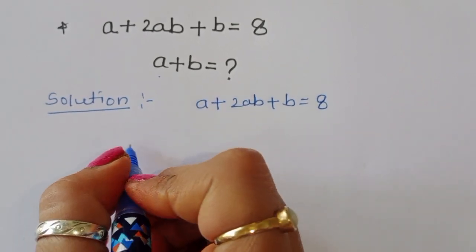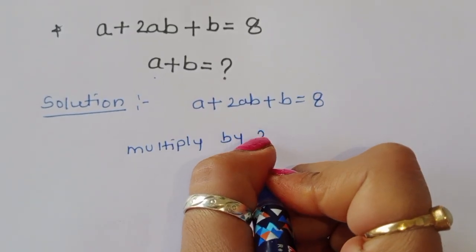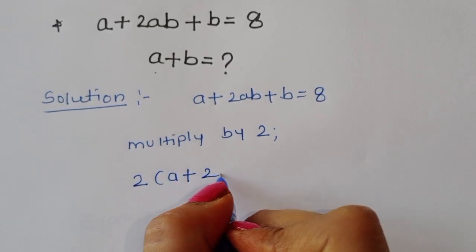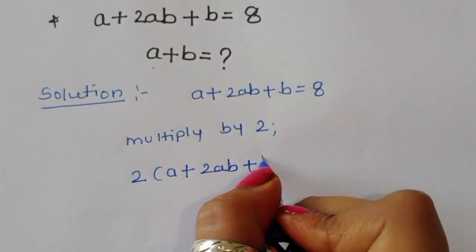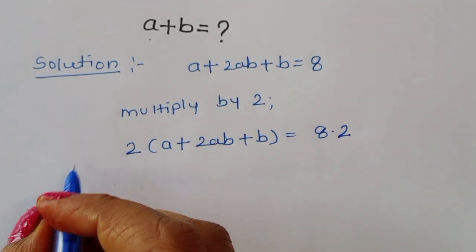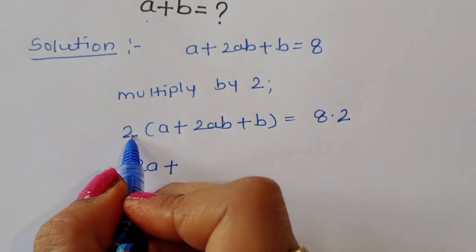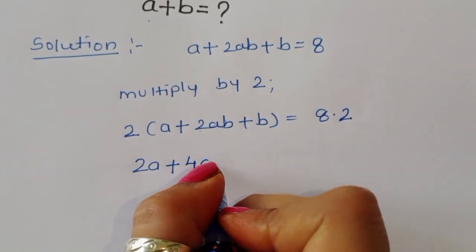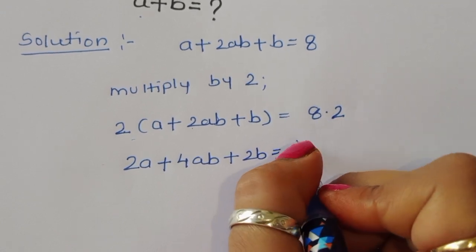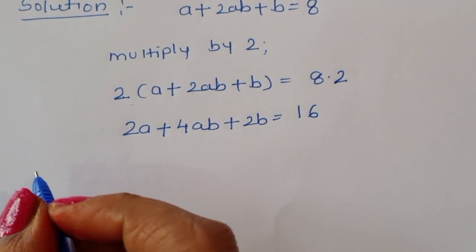We can multiply both sides by 2. Multiplying by 2 on both sides, we get 2 times (a plus 2ab plus b) is equal to 8 times 2, which gives us 2a plus 4ab plus 2b is equal to 16.